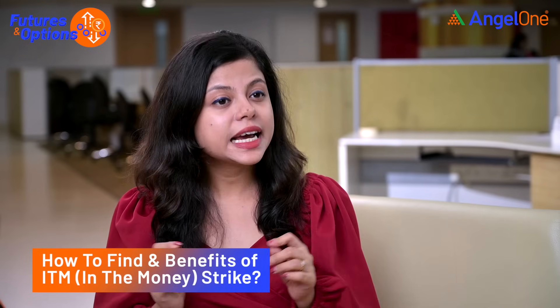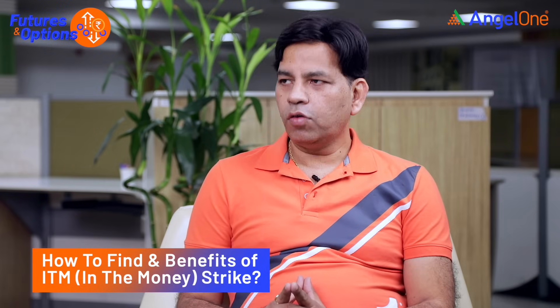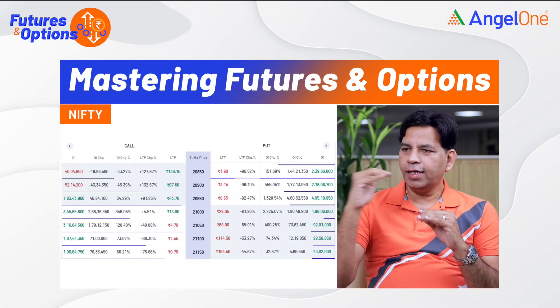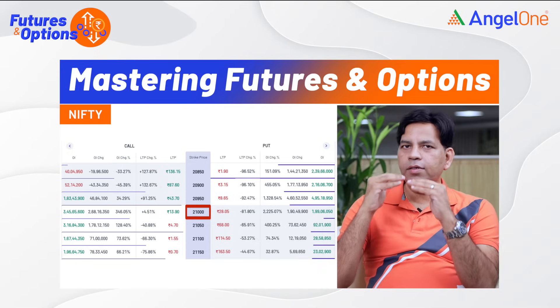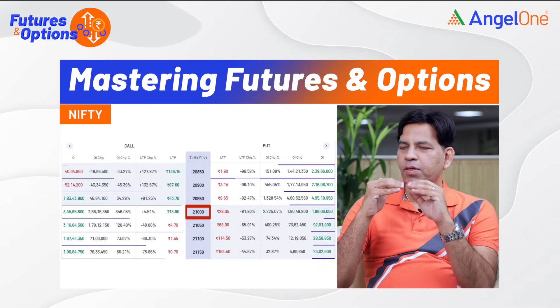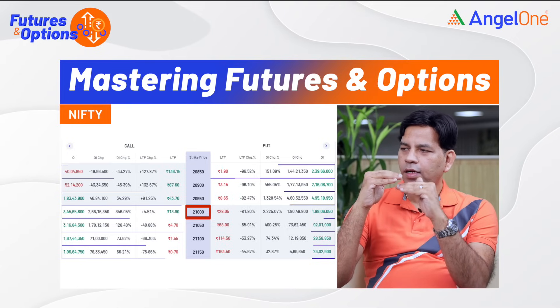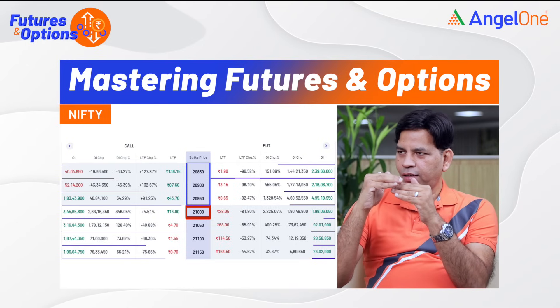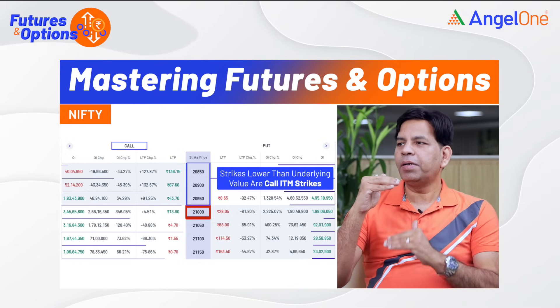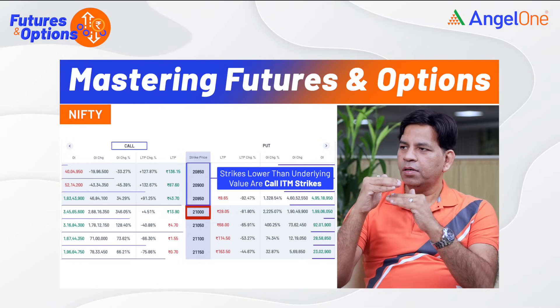Let me explain ITM strikes — in the money options. For the call option, suppose Nifty's underlying value is 21,000 and the strike interval is 50. So, as many strikes as are below 21,000 — like 20,950 and 20,900 — those are called in the money options. In the money options are more expensive, and as you go deeper they become deep in the money options.